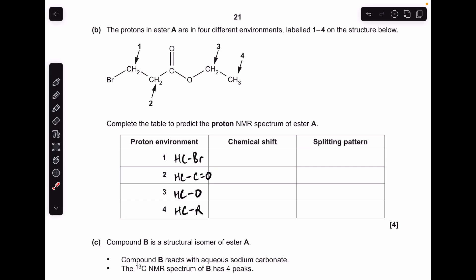Moving on to part B, you can see I've already populated the type of proton environment we've got. Number one is H to C to Br, H to C to C double bond O, H to C to single bond O, and H to C to R. All we need to do is go to the datasheet and find out the range for these chemical shifts. The bar on the datasheet tells us that, and then we'll talk about the splitting patterns in a second.